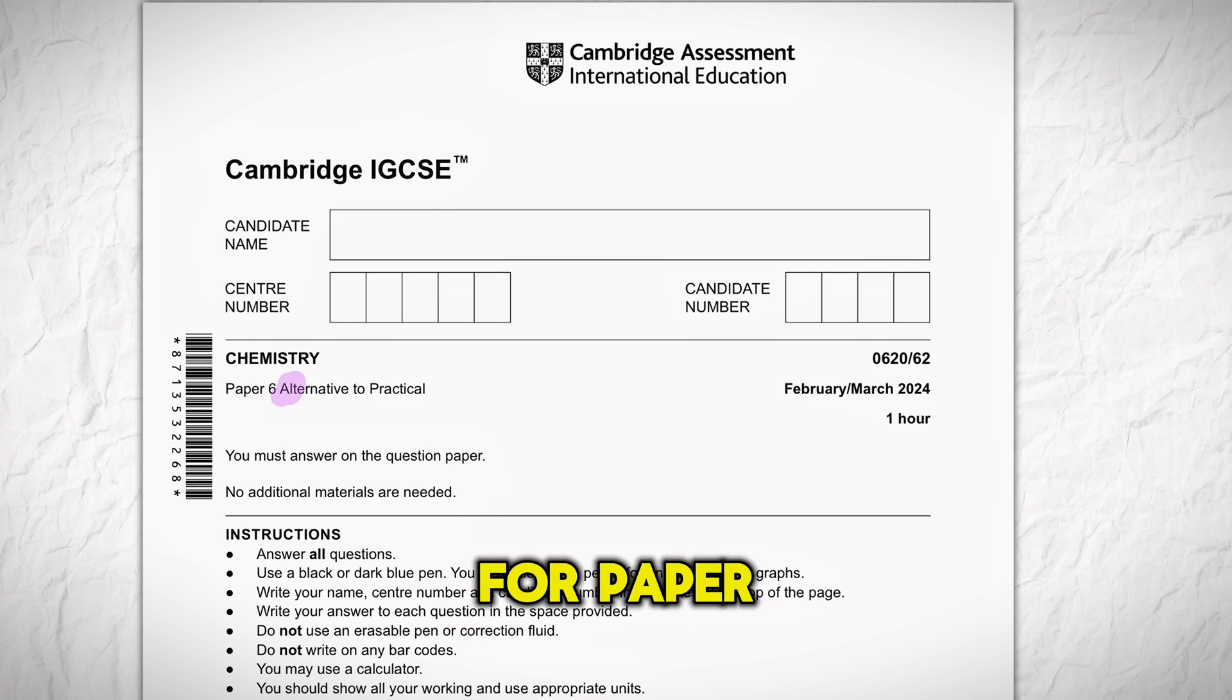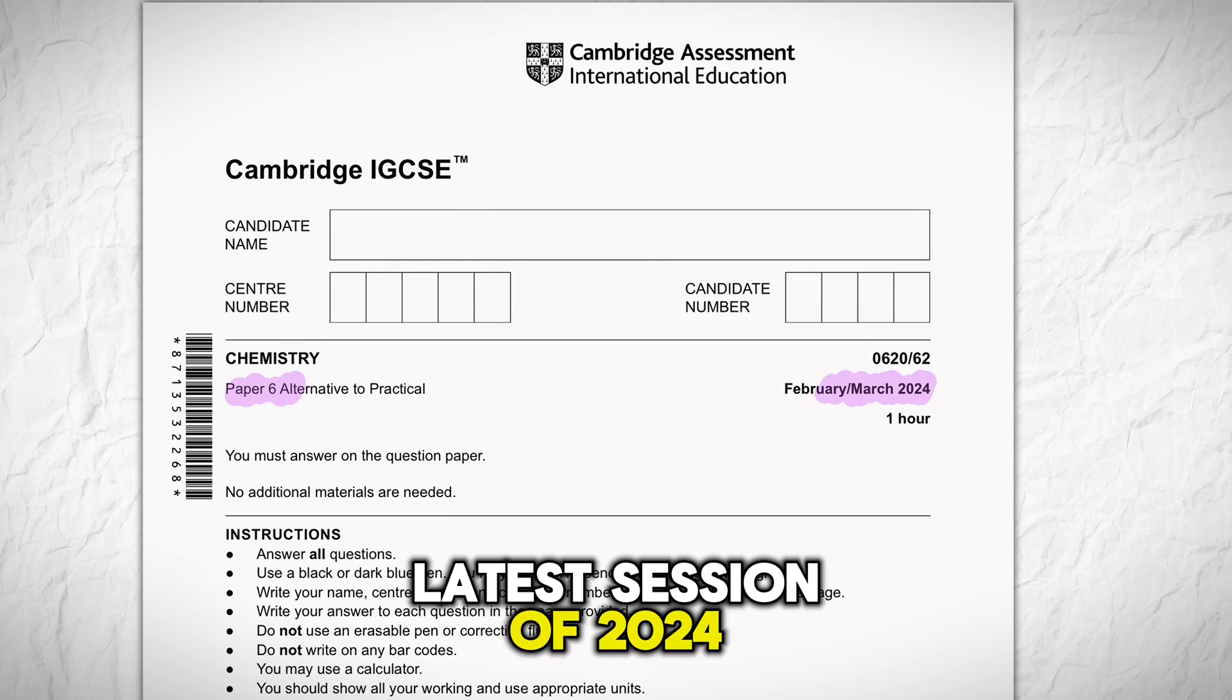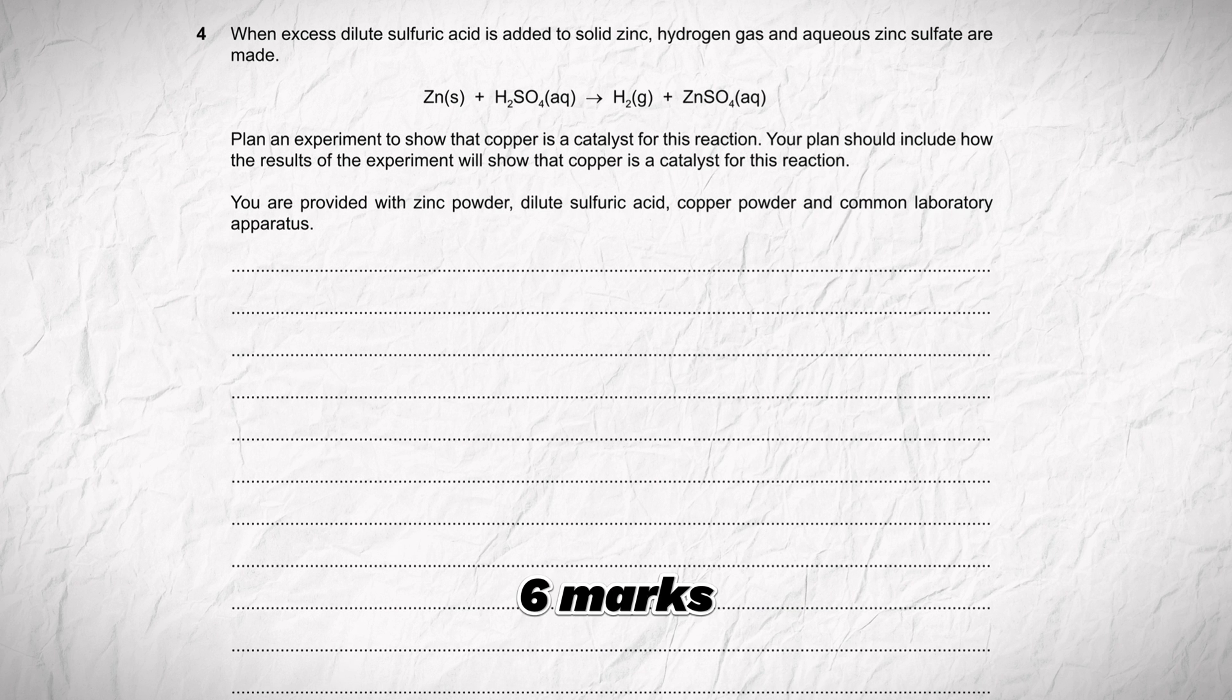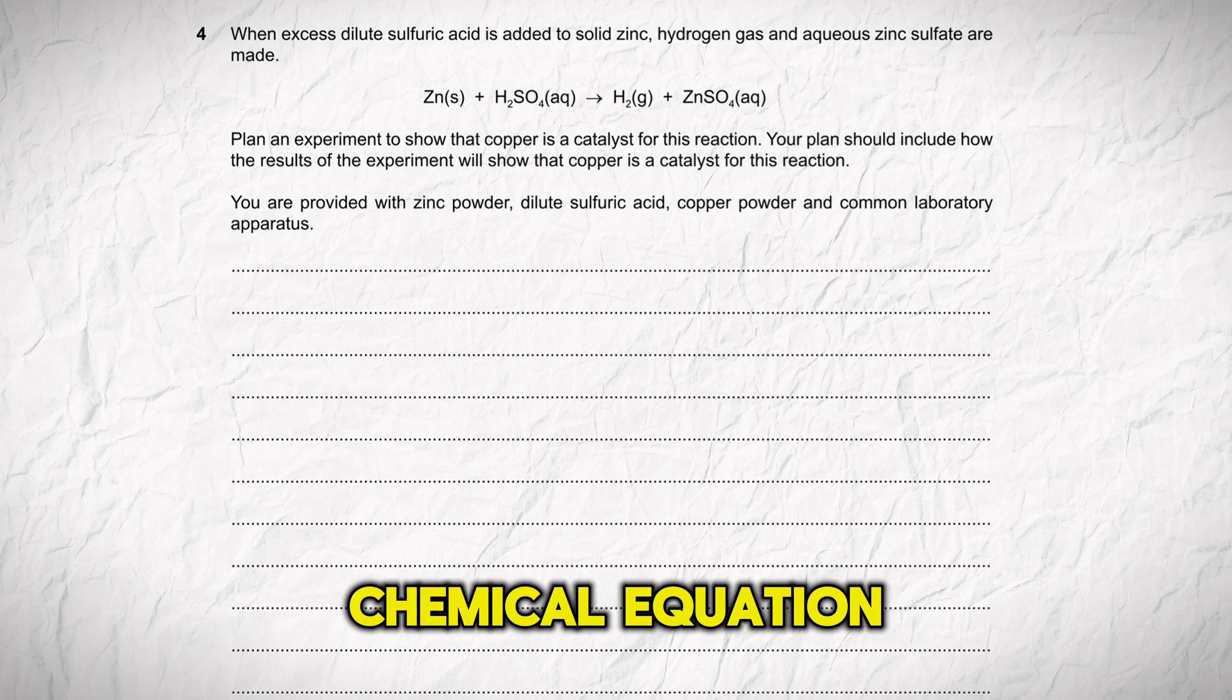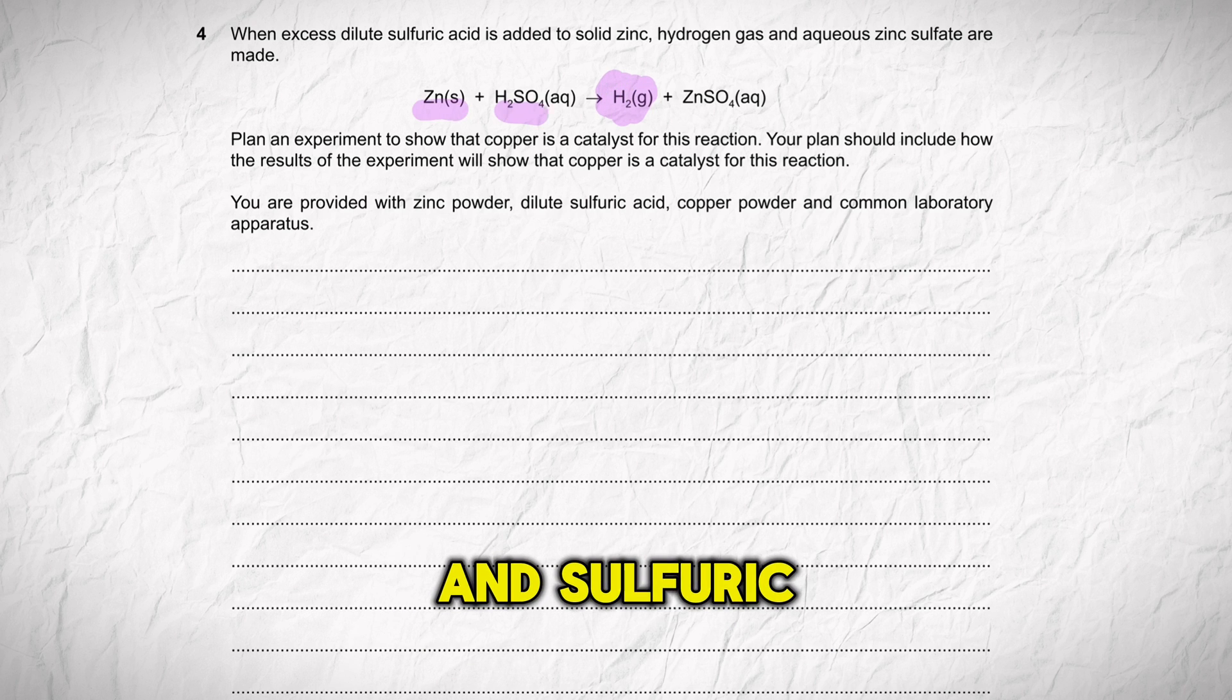This is question 4 for Paper 6 IGCSE Chemistry from the latest session of 2024. This question is worth six marks. We're given a chemical equation where hydrogen gas is produced from the reaction of zinc and sulfuric acid.